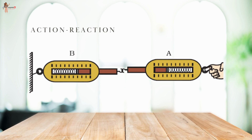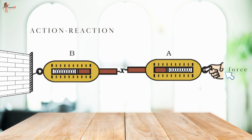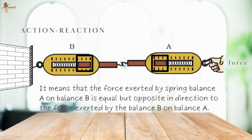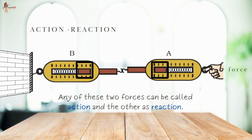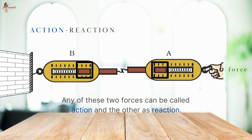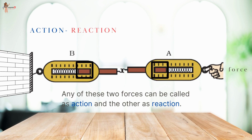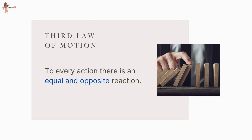Consider two spring balances connected together, with the fixed end of balance B attached to a rigid wall. When a force is applied through the free end of spring balance A, both balances show the same readings. This means the force exerted by spring balance A on balance B is equal to but opposite in direction to the force exerted by B on A. Either of these forces can be called action, and the other reaction. This gives us the alternative statement of the Third Law: to every action there is an equal and opposite reaction.